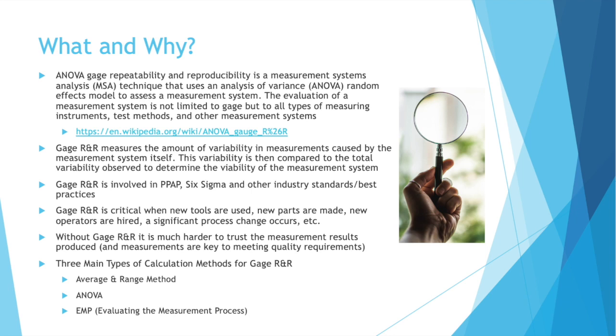Anything you're doing to measure your product is part of your measurement system. Gauge R&R measures the amount of variability in measurements caused by the measurement system itself. This variability is then compared to the total variability observed to determine the viability of the measurement system.